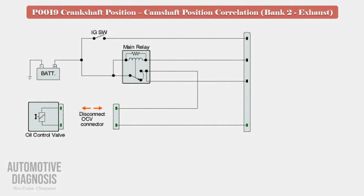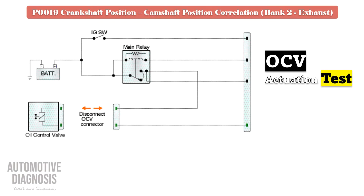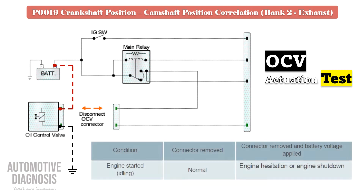Remove the OCV connector, then start the engine. Apply battery positive and negative to the OCV when the engine is running. If the solenoid is functioning, the engine must hesitate or stall. If after activating the solenoid in the test you do not see any changes in engine operation, it means the OCV might be faulty, so you must remove the OCV to do more testing.